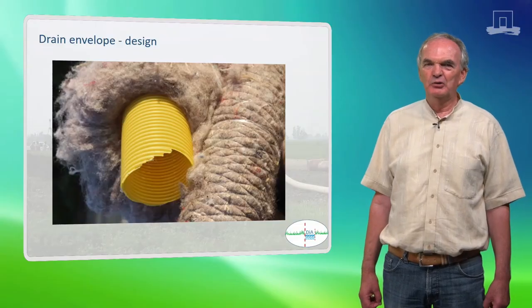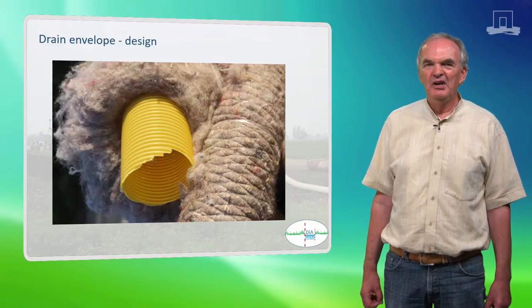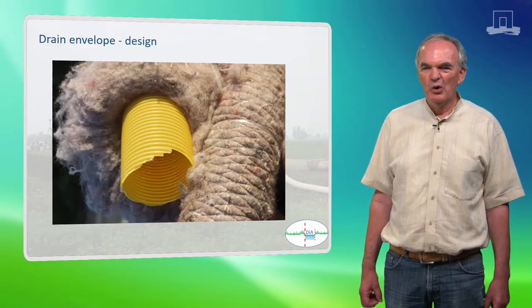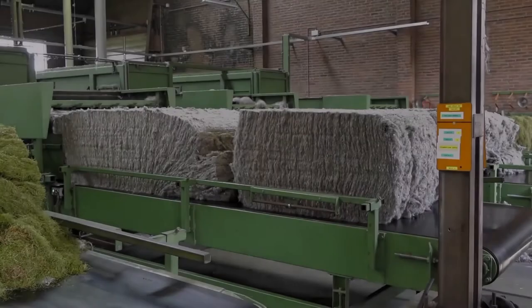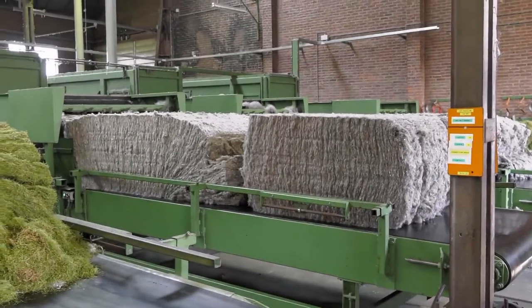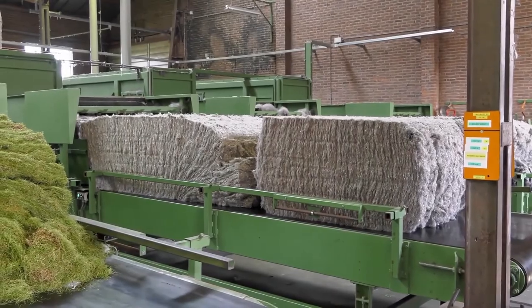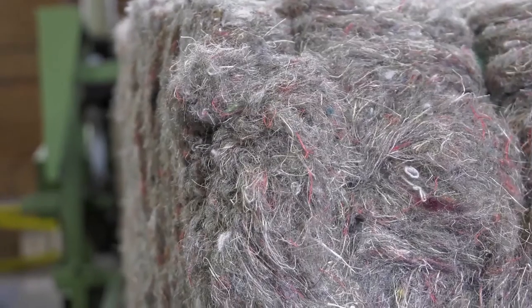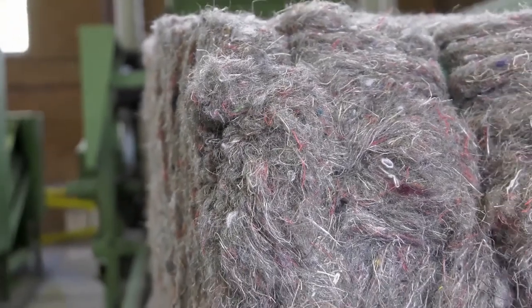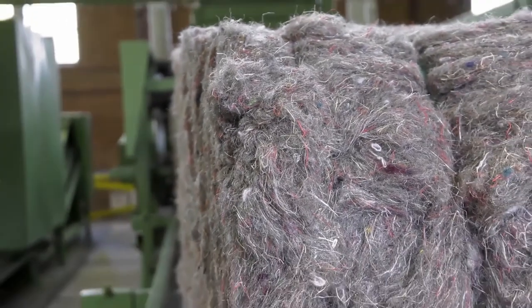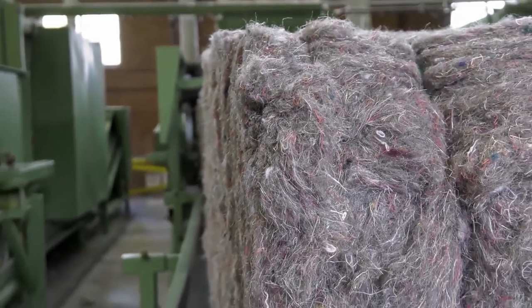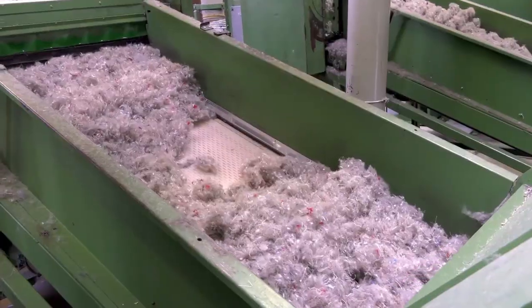Manufacturing a good envelope is even more complicated. Here, you see how an envelope is made of polypropylene fibers and is wrapped around the drainpipe.